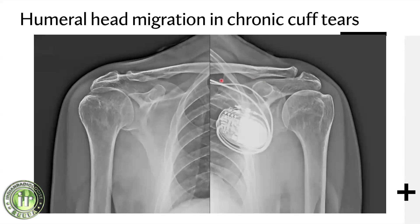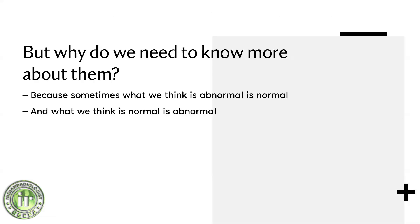Another thing we look for very often is to see if the humeral head is high-riding - in other words, if it has migrated superiorly or is closer to the acromion compared to the opposite side, or sometimes just touching the acromion. This gives us an idea that somebody has had rotator cuff insufficiency, and more often than not it's chronic rotator cuff insufficiency when the humeral head rises up.